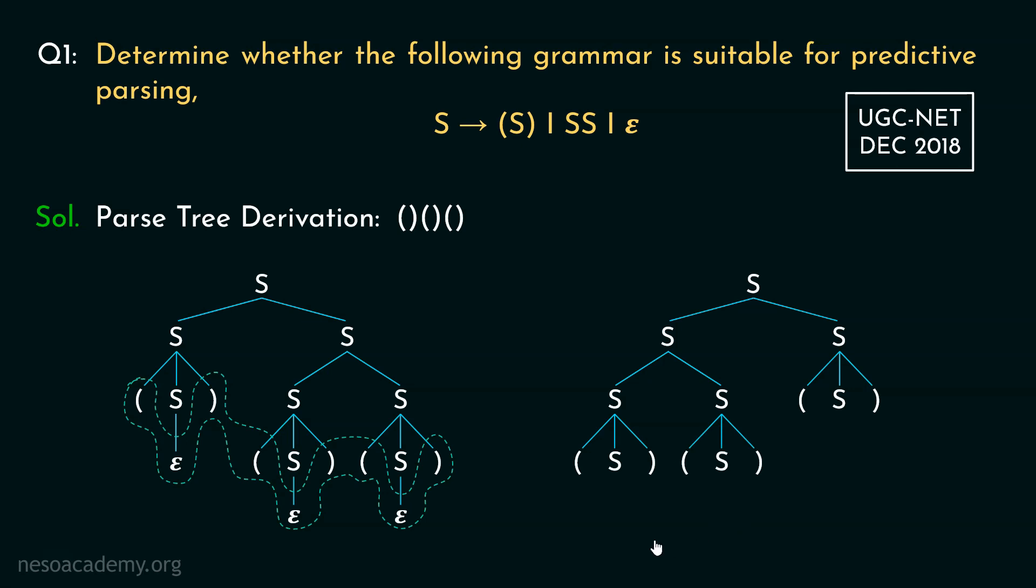Now in order to complete the derivation process, let's derive Epsilon from all these S. Now if we traverse the parse tree, top to bottom and left to right, we will end up acquiring three pairs of parenthesis.